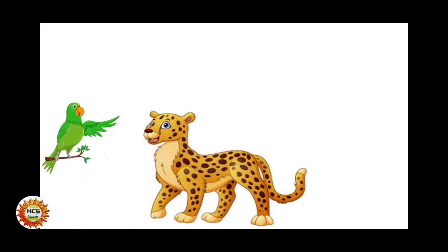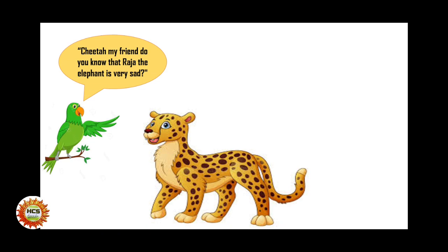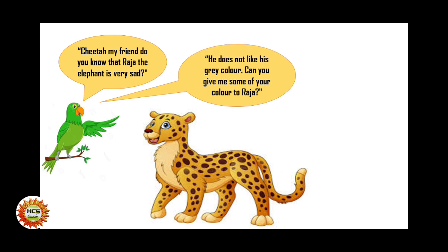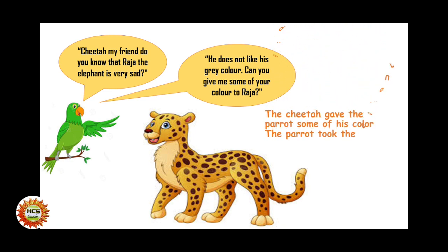The parrot flew to the cheetah and said, cheetah my friend, do you know that Raja the elephant is very sad? He does not like his grey color. Can you give me some of your color for Raja? So the cheetah gave the parrot some of his color. The parrot took the color and flew back to Raja.